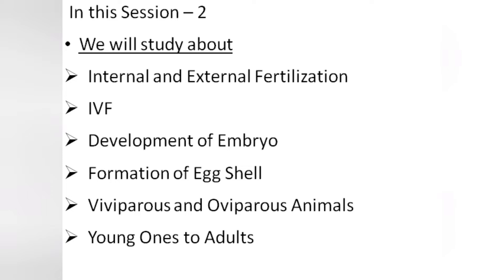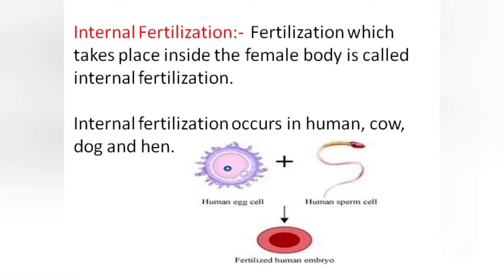Now we are starting with internal fertilization. As we discussed in session 1, the fertilization which takes place inside the female body is called internal fertilization. In internal fertilization, sperm cells are deposited inside the female's body where they meet an egg cell and then development occurs. Internal fertilization occurs in many animals including human, cow, dog and hen.